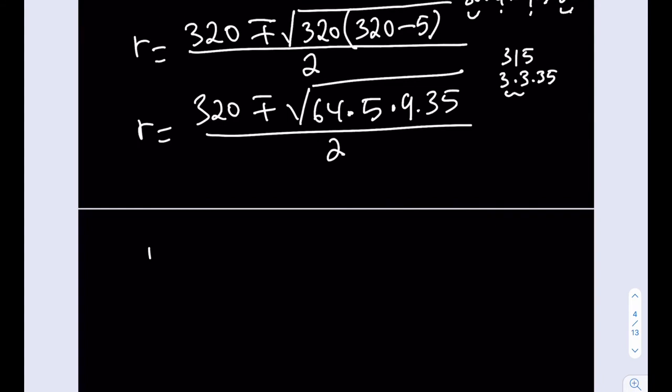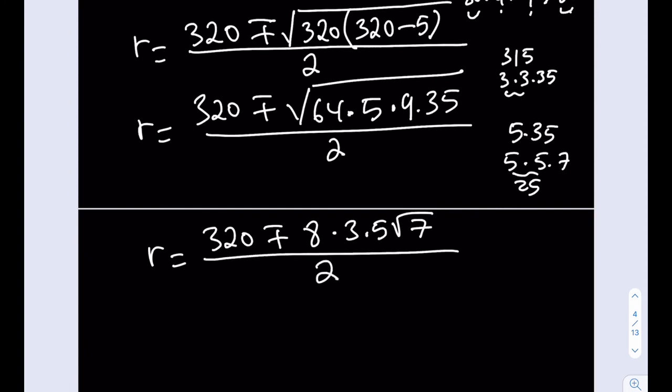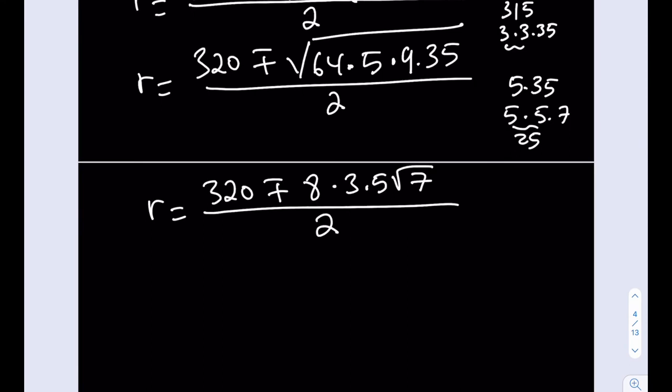Now, 64 is a perfect square, so you can take it out as an 8. 9 is a perfect square. That becomes a 3. I have the 5 times 35 inside. So, 5 times 35 is 5 times 5 times 7, and that's 25 times 7. So, you can also factor out the 25 as a 5, and you're only going to be ending up with 7 inside. Without further ado, we can just write it that way. Now, let's go ahead and multiply 8 and 3 and 5 together. 8 times 3 is 24, 24 times 5 is 120. So, my expression becomes, after so much trouble, 120 times root 7 divided by 2.